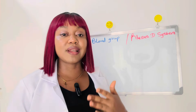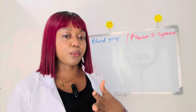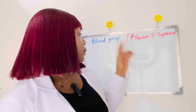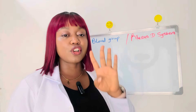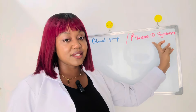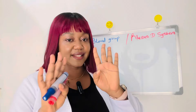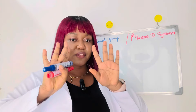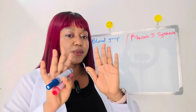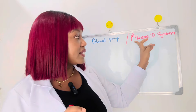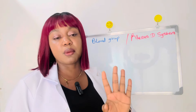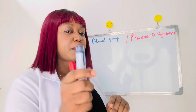Your blood group depends on the kind of genes you receive from your parents and varies from individual to individual. When we talk of blood group there are four different types, but when we come to the Rhesus D system we'll be talking about eight different types of blood group. If it's just blood group we talk about four types, but with the Rhesus D factor it becomes eight.